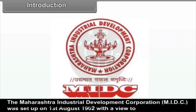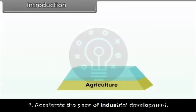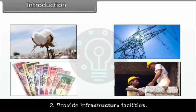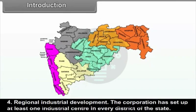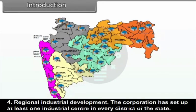The Maharashtra Industrial Development Corporation, MIDC, was set up on 1st August 1962 with a view to accelerate the pace of industrial development, provide infrastructural facilities, promotion of industries in underdeveloped regions and regional industrial development. The corporation has set up at least one industrial centre in every district of the state.